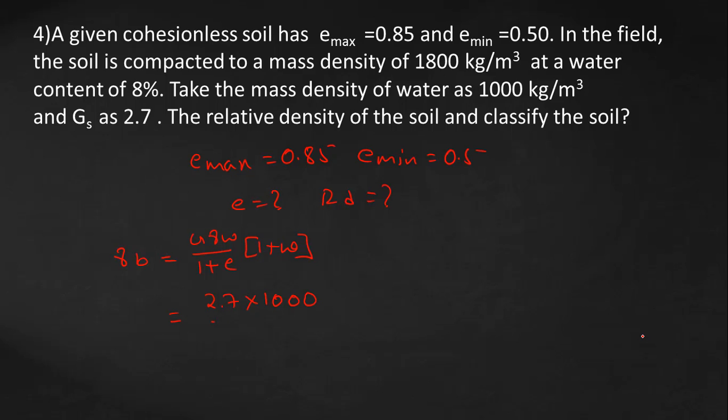What is G? 2.7. What is mass density of water? That is 1000 by 1 plus e, multiplied by 1 plus W, which is 0.08, so 8 percent. So gamma-bulk equals 1800. Therefore, 1 plus e equals 1.62, so e equals 0.62.